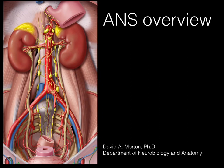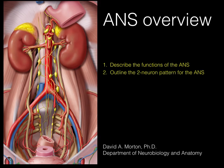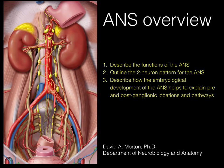We're now going to cover an overview of the autonomic nervous system. First, we'll describe some of the functions of the autonomic nervous system, focusing on the abdominal pelvic region. Second, we'll outline the two-neuron pattern for the autonomic nervous system, and describe how the embryological development of the ANS helps to explain pre- and post-ganglionic locations and pathways.